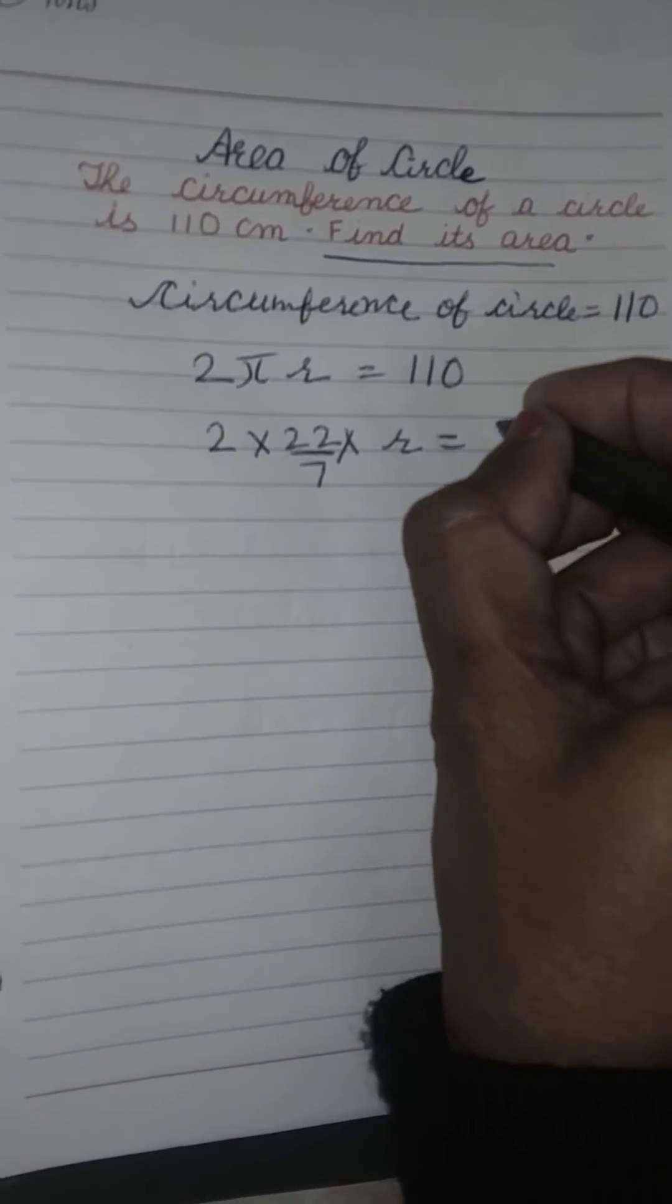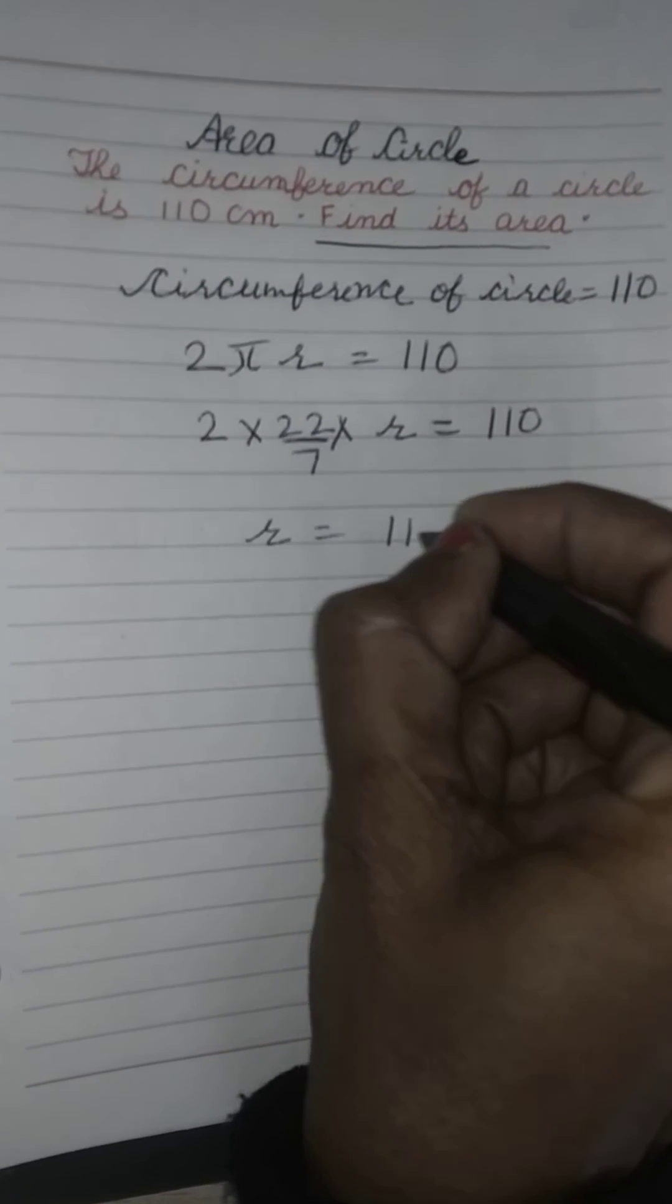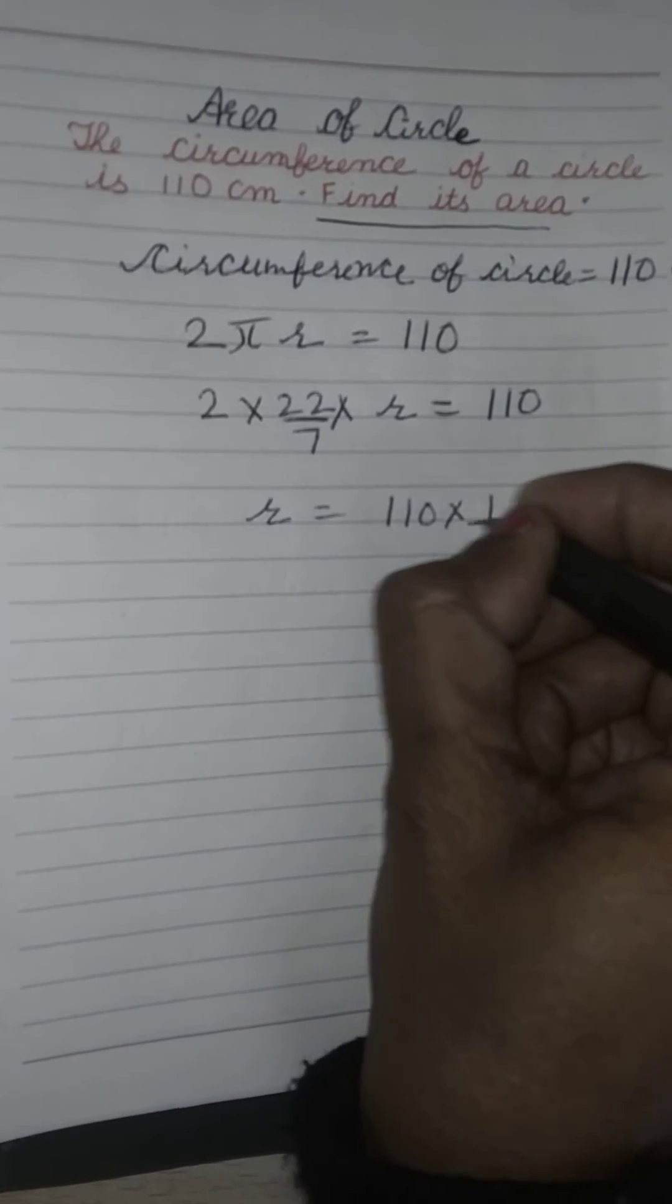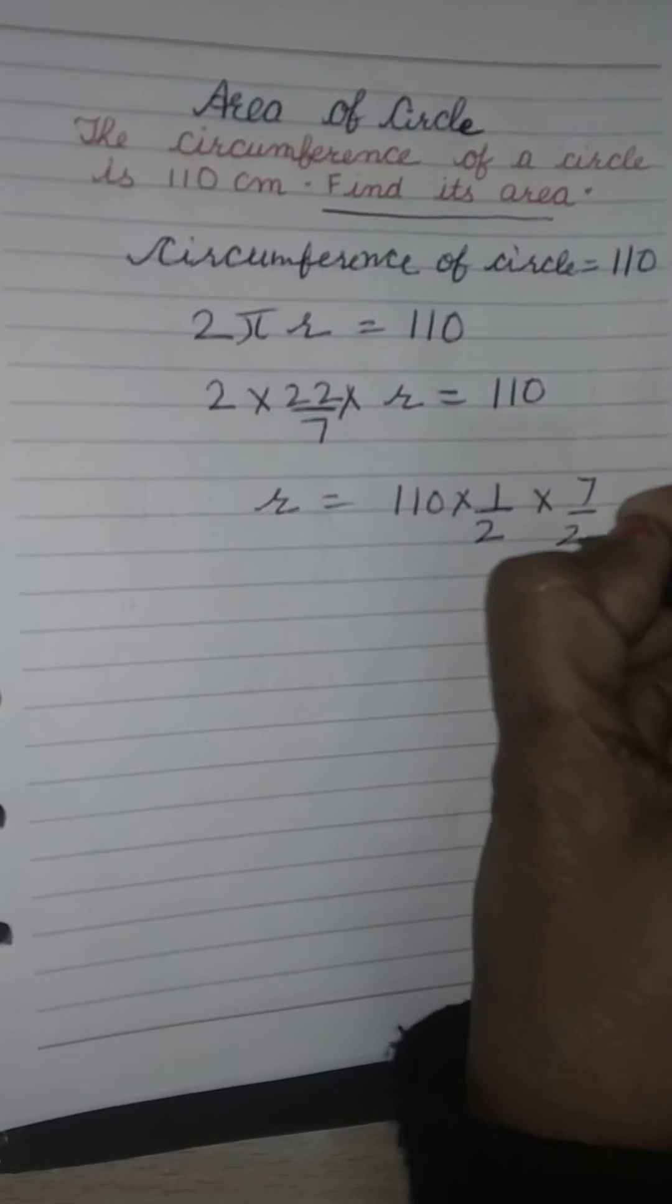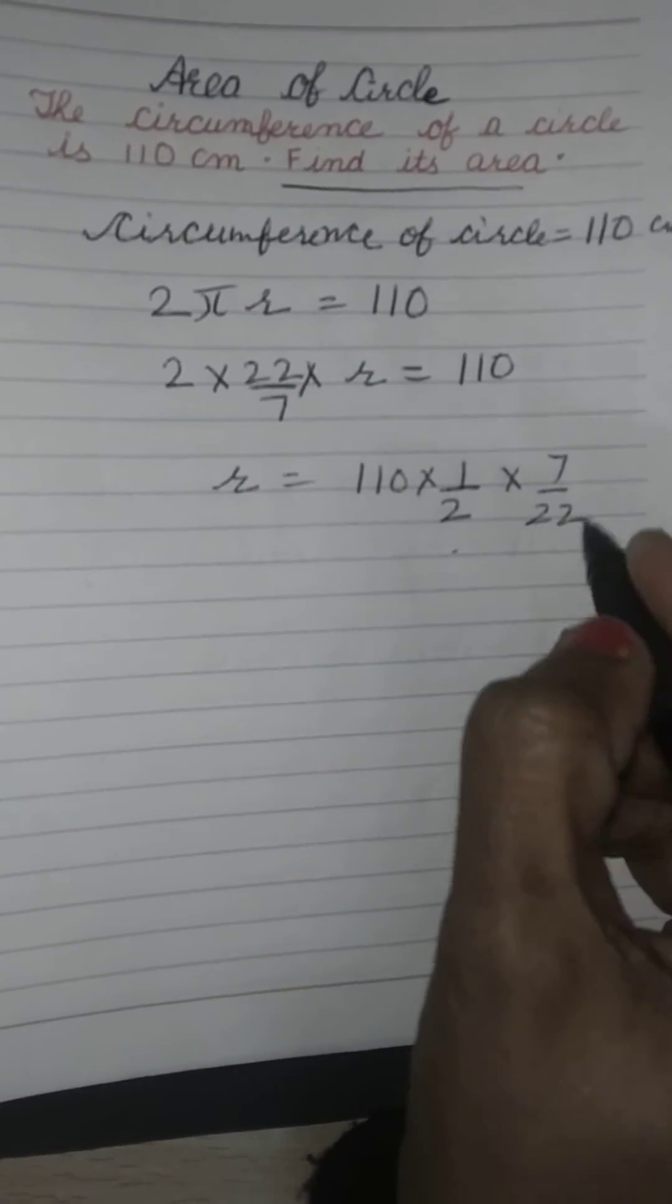r is what we have to find. r will remain here. This will become 1/2, then 7/22, and this will go to that side. It becomes r equals 110 × 1/2 × 7/22.